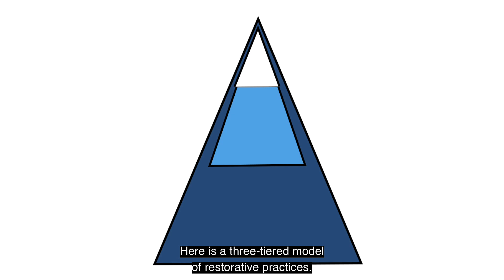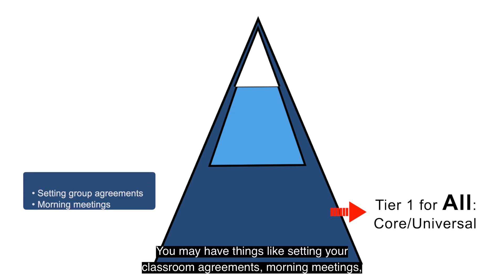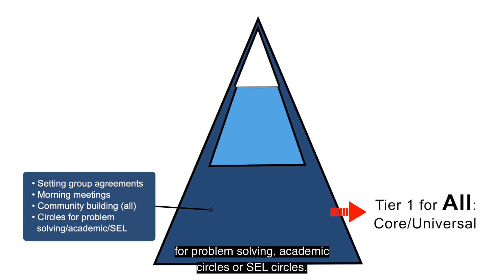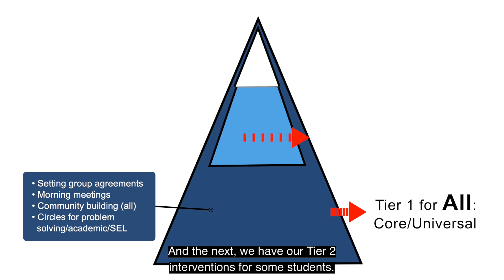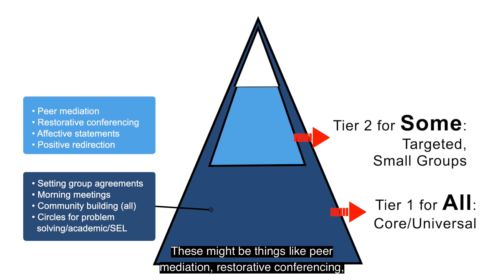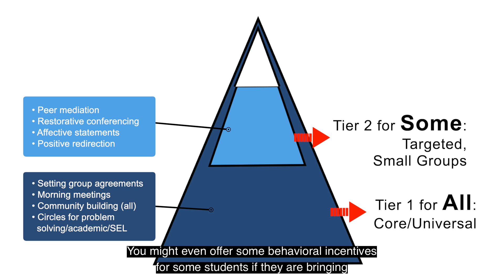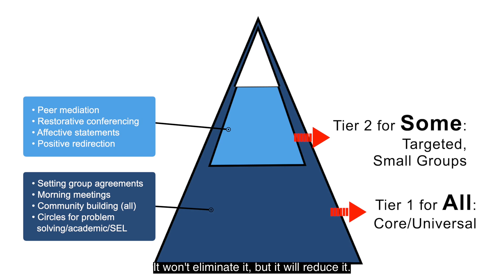Here's a three-tiered model of restorative practices. Tier one is where proactive relationship-building practices happen — things like setting classroom agreements, morning meetings, community building circles, and academic or SEL circles. These are universal supports that all students receive. Tier two interventions, for some students, might include peer mediation, restorative conferencing, affective statements, and positive redirection. It's meant to address behavior challenges or harm that have occurred. If we use tier one consistently and with fidelity, there will be less need for tier two — it won't eliminate it, but it will reduce it.